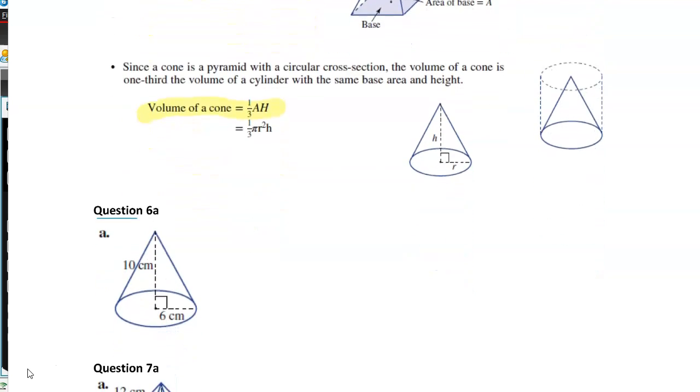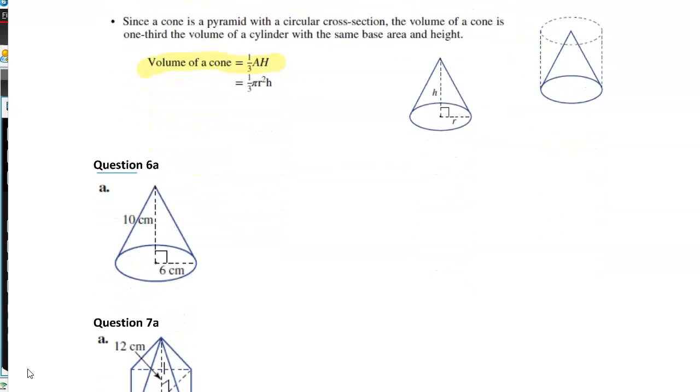So we're finding the volume. One-third area times height. So volume equals one-third π times r squared times height. So volume equals one-third times π times 6 squared times 10.